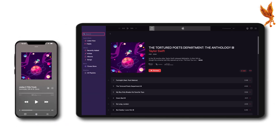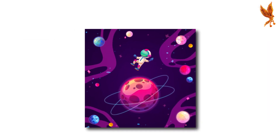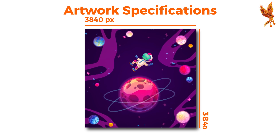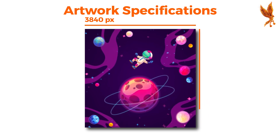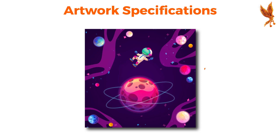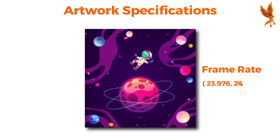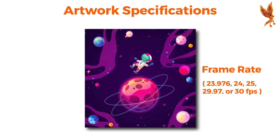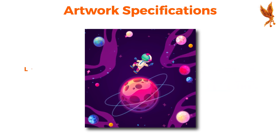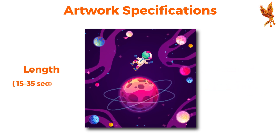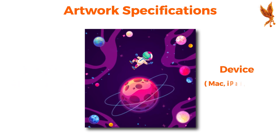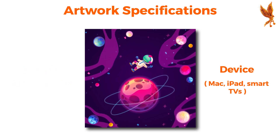Want to bring your music to life with captivating visuals? Apple Music has you covered with Album Motion to provide artwork in motion. Follow these specifications: the resolution should be 3840 pixels by 3840 pixels, the frame rate can be 23.976, 24, 25, 29.97, or 30 frames per second, and the length should be between 15 to 30 seconds — easily recognizable on iPhone, iPad, Mac, and smart TVs.